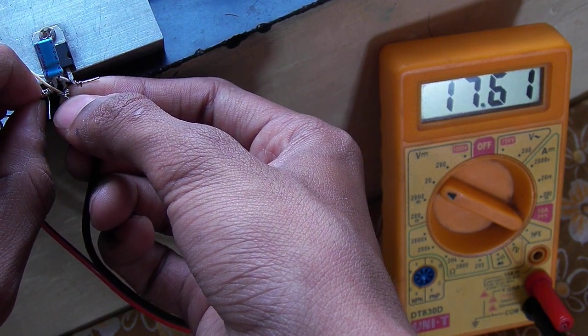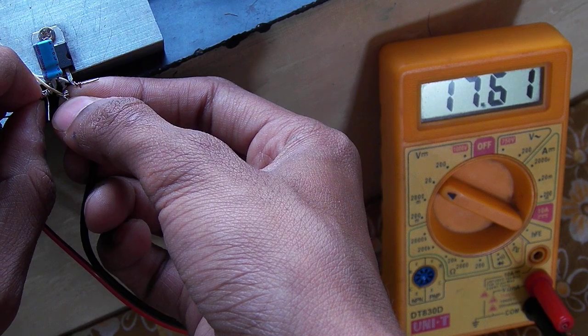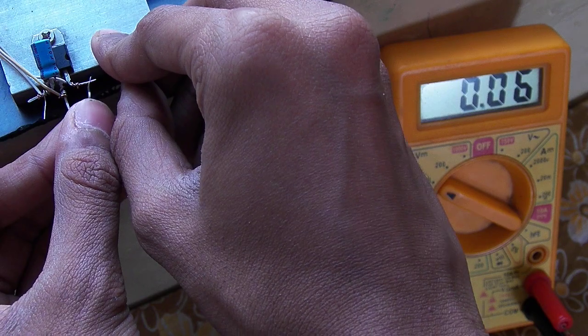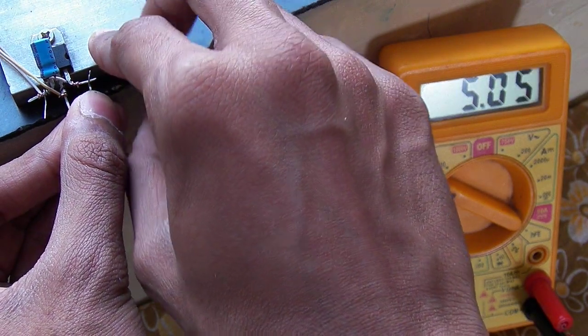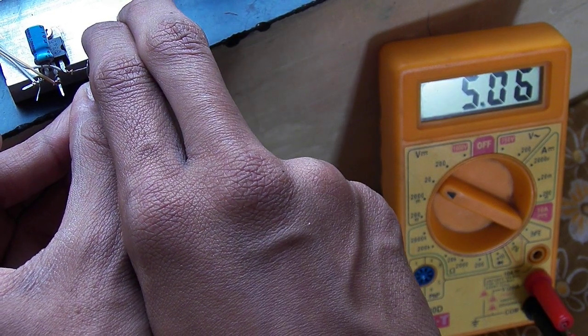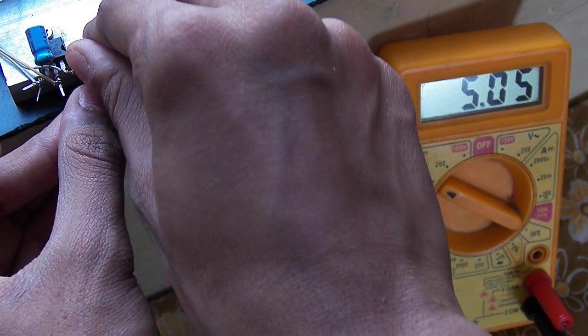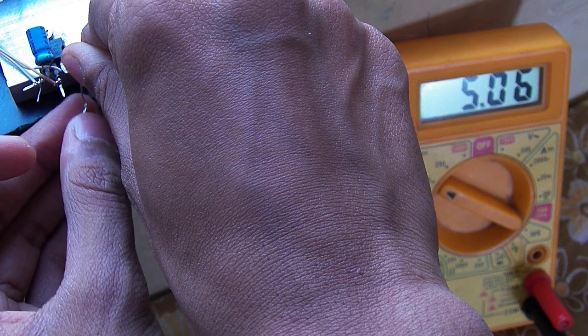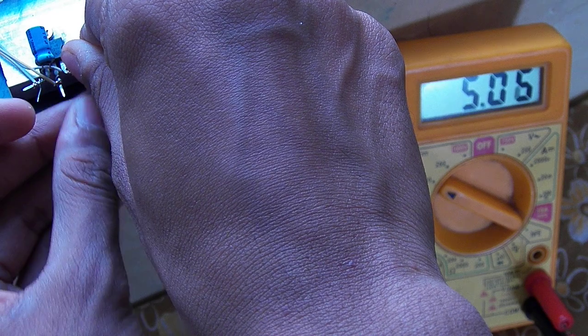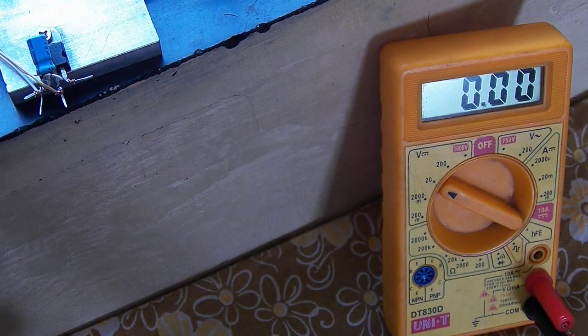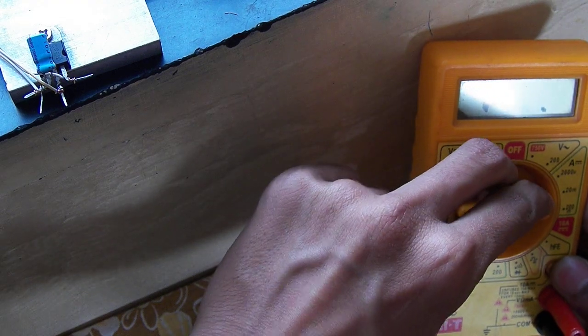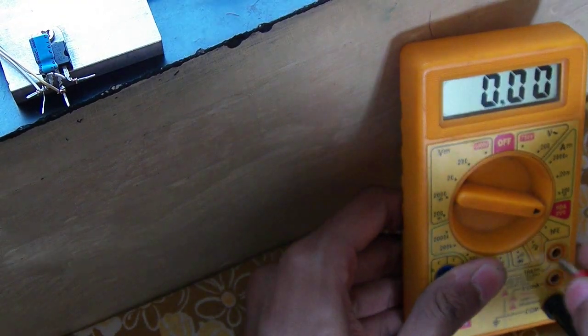Now it is 17.6 volts. The output of my controller is 5 volts, which remains constant in pretty much any condition, except if the input voltage is less than 5 volts, then it should not work. Let me show you the output. I am going to 10-amp setting.